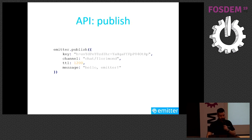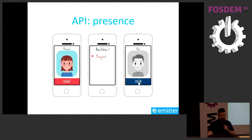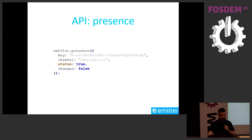There is another feature I want to talk about: presence. It allows you to monitor which devices are subscribed to a channel, which is obviously very useful for lobbies. To use it, you call emitter.presence(), providing an API key, the channel you want to monitor, and two parameters. The first, status, if set to true, immediately returns a list of people subscribed to the channel. The second, changes, if set to true, sends events whenever a person subscribes or unsubscribes from the channel.